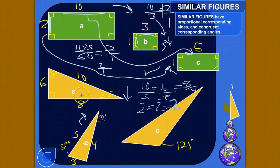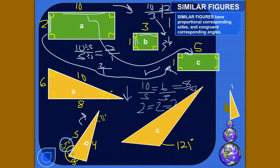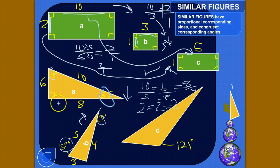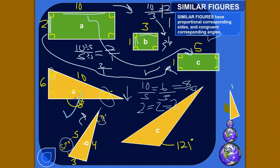These two triangles definitely have proportional corresponding sides. Do they have congruent corresponding angles? This angle corresponds to this angle and they're both 53 degrees. This angle corresponds to that angle and they're both 37 degrees. And these are both 90 degree angles. So yes, congruent corresponding angles — these two triangles are similar.